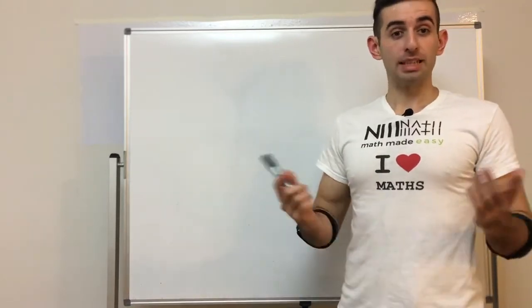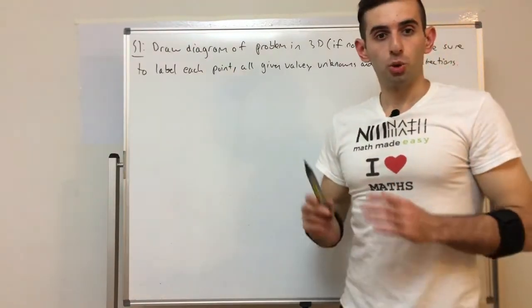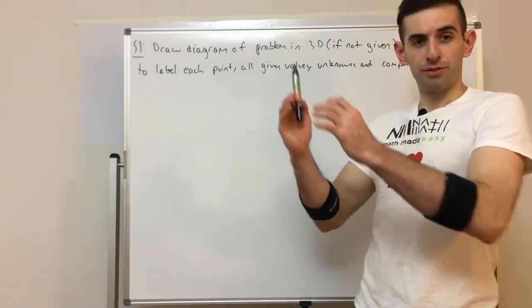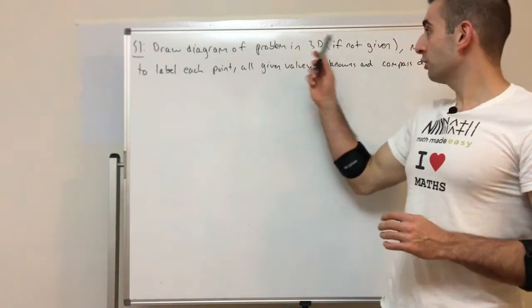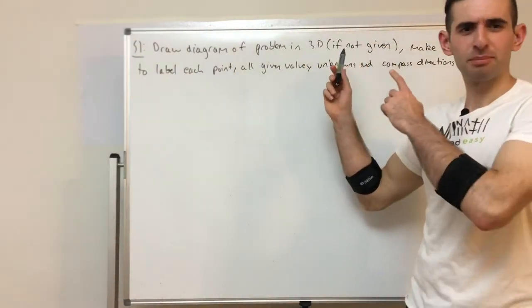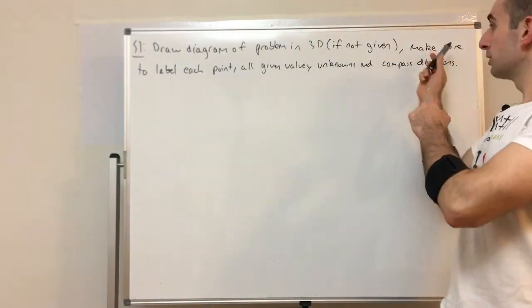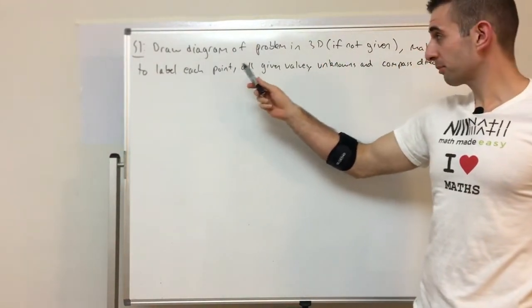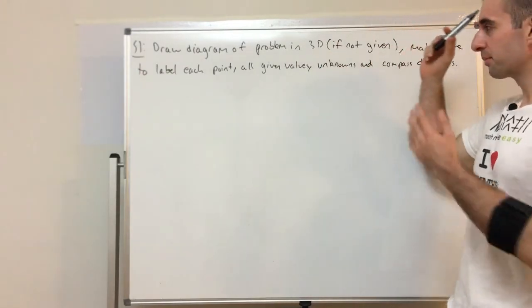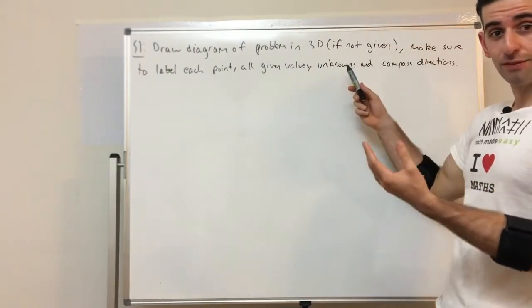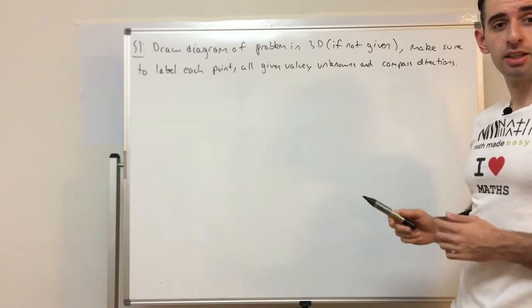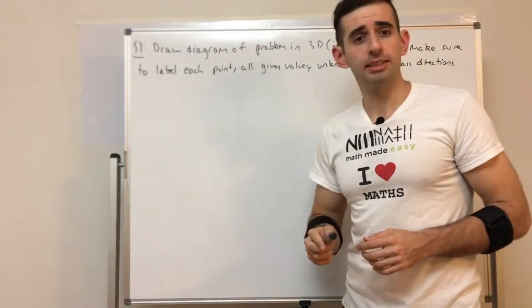So what's step one? Draw a diagram of the 3D problem, and this is important if the diagram is not given. Make sure to label each point, all the given values, the unknowns which you're going to have to find, and compass directions because these are going to make step two a lot easier.